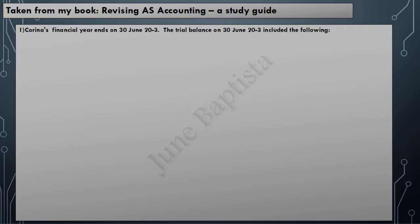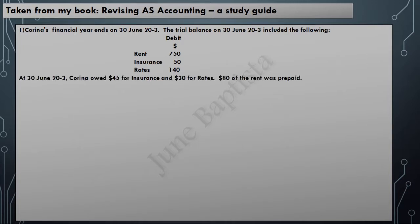Carina's financial year ends on 30th June 20-3. The trial balance on that day included: rent, a debit of $750; insurance, a debit of $50; and rates, a debit of $140. Since they are all debits, they are expenses. Further information at 30th June 20-3: Carina owed $45 for insurance and $30 for rates — these are accruals and must be included as expenses in this year's income statement as per the matching principle. Also, $80 of the rent was prepaid — as per the matching principle, this should not be included in this year's income statement expenses.